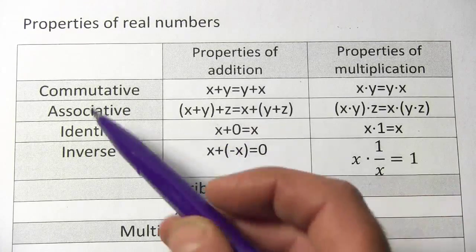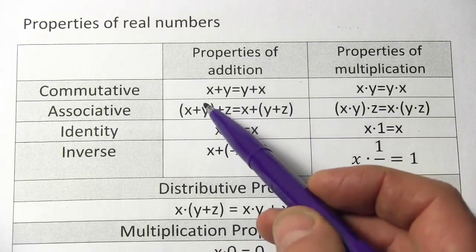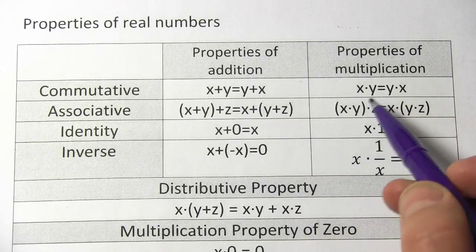But just to run over these really quickly, the commutative property says it doesn't matter which order you add two things in. x plus y is the same as y plus x, or which order you multiply them in, same kind of thing.